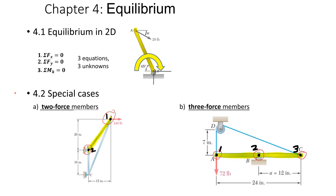For this little video, we're going to talk about two special cases in two-dimensional equilibrium. One is for problems involving a two-force member, which is a member that has forces applied only at two positions on it. The other case is for a three-force member, which is a solid chunk of material where there are three different spots that forces are applied.